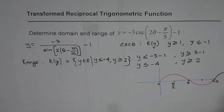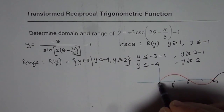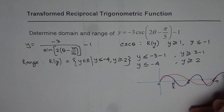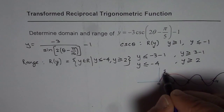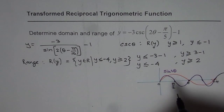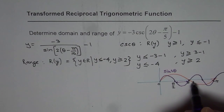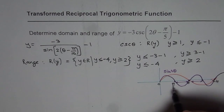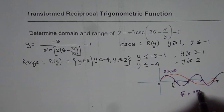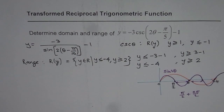So the zeros of sine(2θ) will be at π/2. Let me sketch sine(2θ) — it will be two waves within the usual period. The zeros are separated not by π but by π/2. So the zero locations are 0, π/2, π, and so on, i.e., n times π/2. That is how you get the zeros.